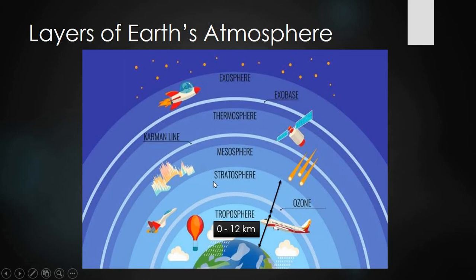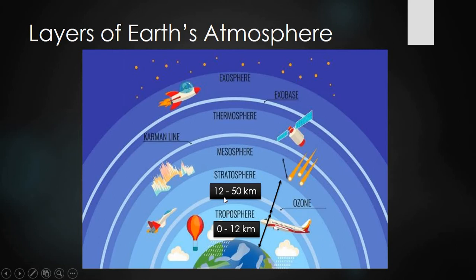After the troposphere comes the stratosphere. Jets are present in the stratosphere, but it is not famous for that — the stratosphere is famous for the ozone layer. The ozone layer is located in the lower part of the stratosphere. Its range is from 12 km to 50 km, meaning it begins where the troposphere ends at 12 km and extends up to 50 km.